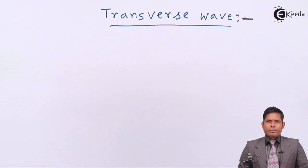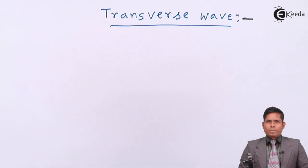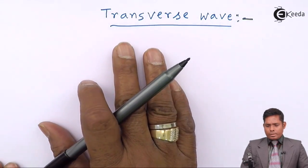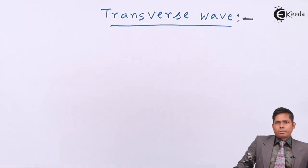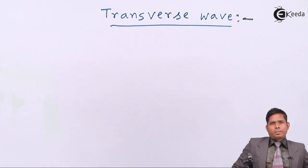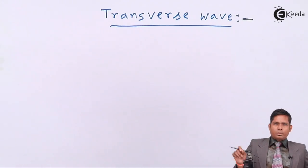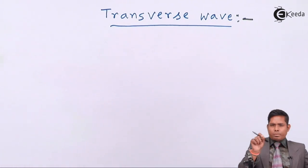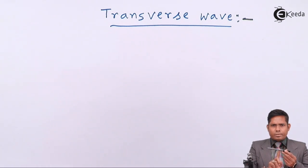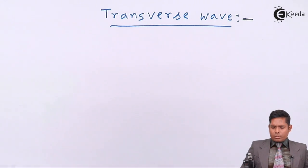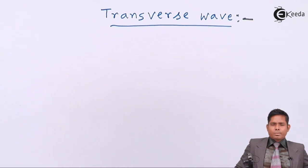Today we will discuss transverse waves and their characteristics. Let us define what a transverse wave is. As we have discussed earlier, in a transverse wave, the particles vibrate perpendicular to the direction of propagation of the wave. That means if a wave propagates in one direction, the particles will vibrate perpendicular to it. This is known as a transverse wave.